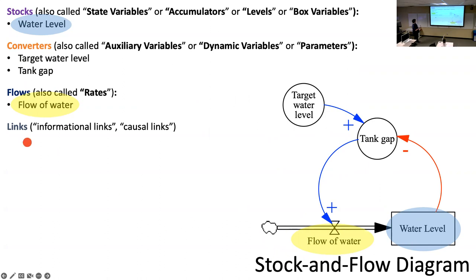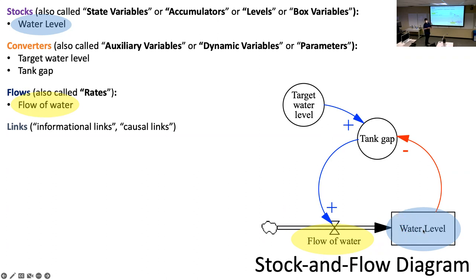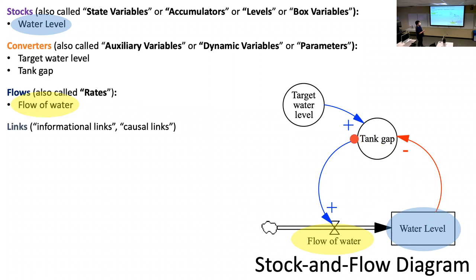The links show how things are related, exactly as in causal loop diagrams. In a stock-and-flow diagram it's not always possible to assign a polarity — for instance, tank gap doesn't have a clear monotonic relationship to water level. At some water levels the relationship is positive, at others negative — similar to the fish regeneration curve. You're not always able to label links plus and minus, though doing so can help the reader recognize feedback loops.